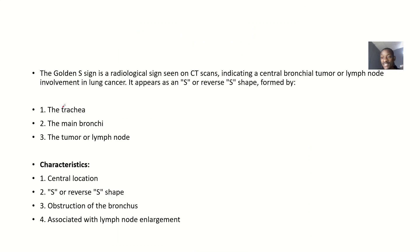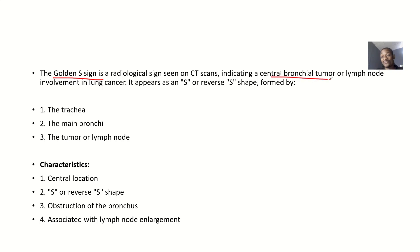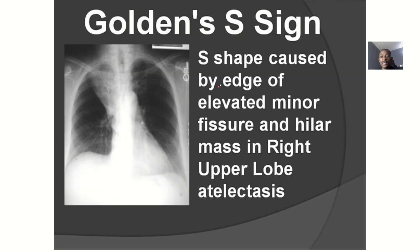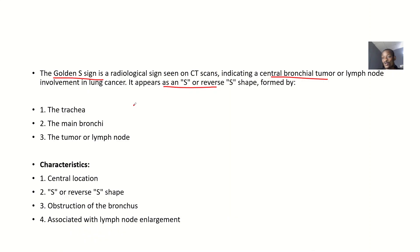Let's look at the definition. The Golden S sign is a radiological sign that can be seen on CT scans. It indicates a central bronchial tumor or lymph node involvement in lung cancer. It appears as an S or a reverse S shape on imaging.